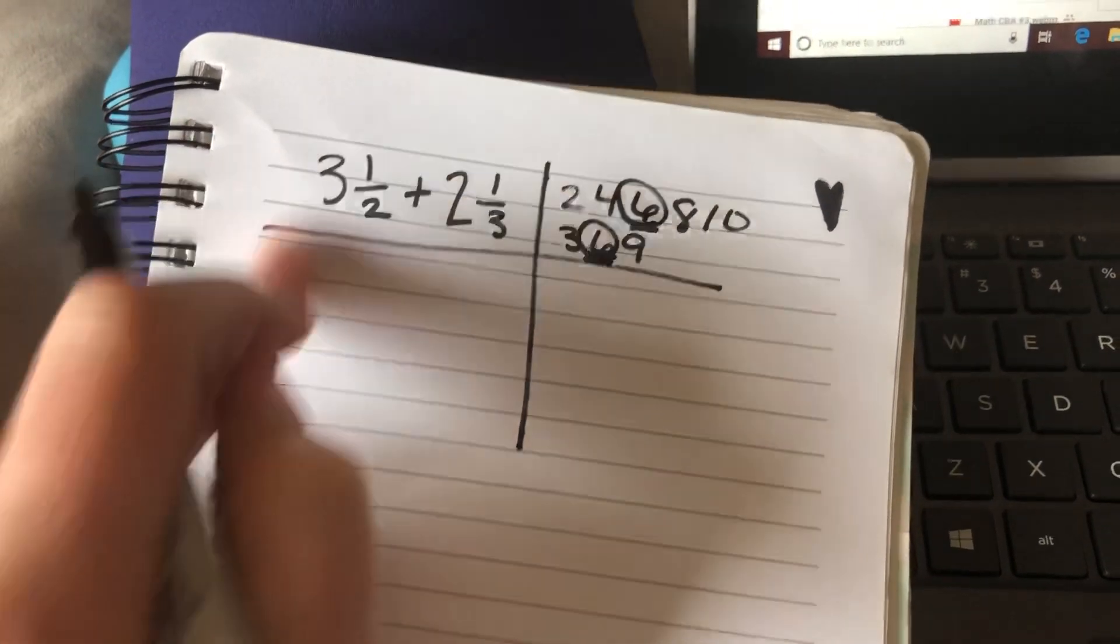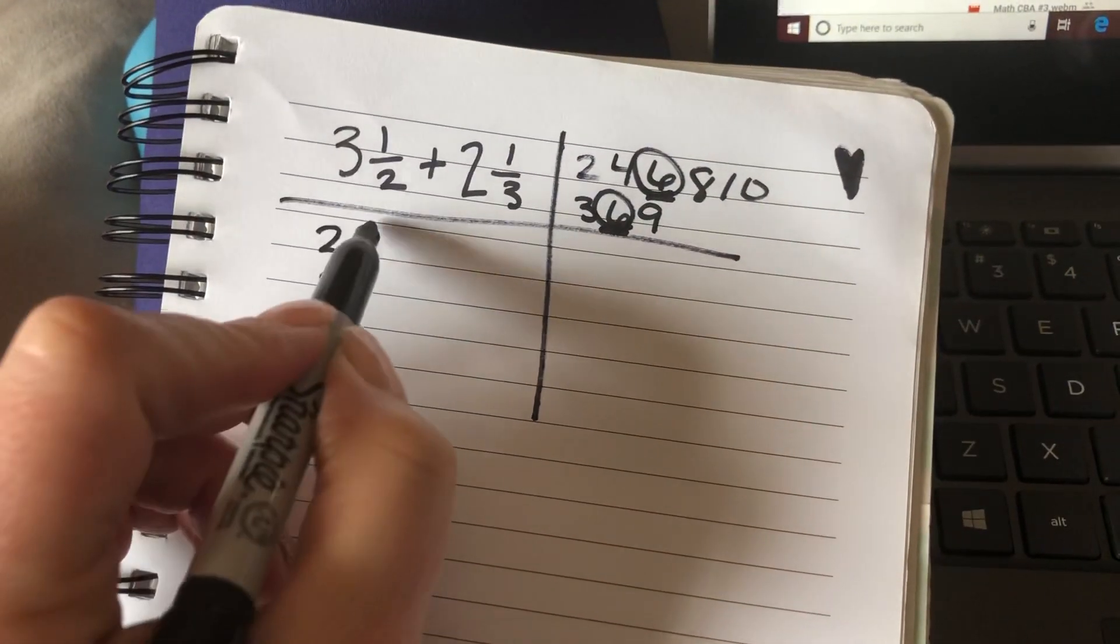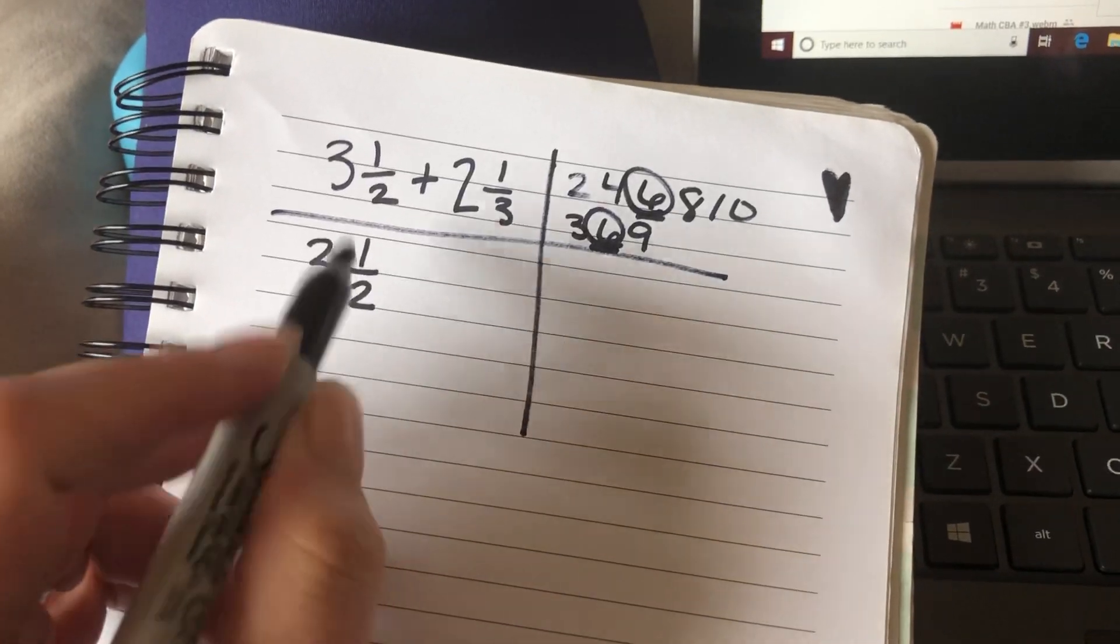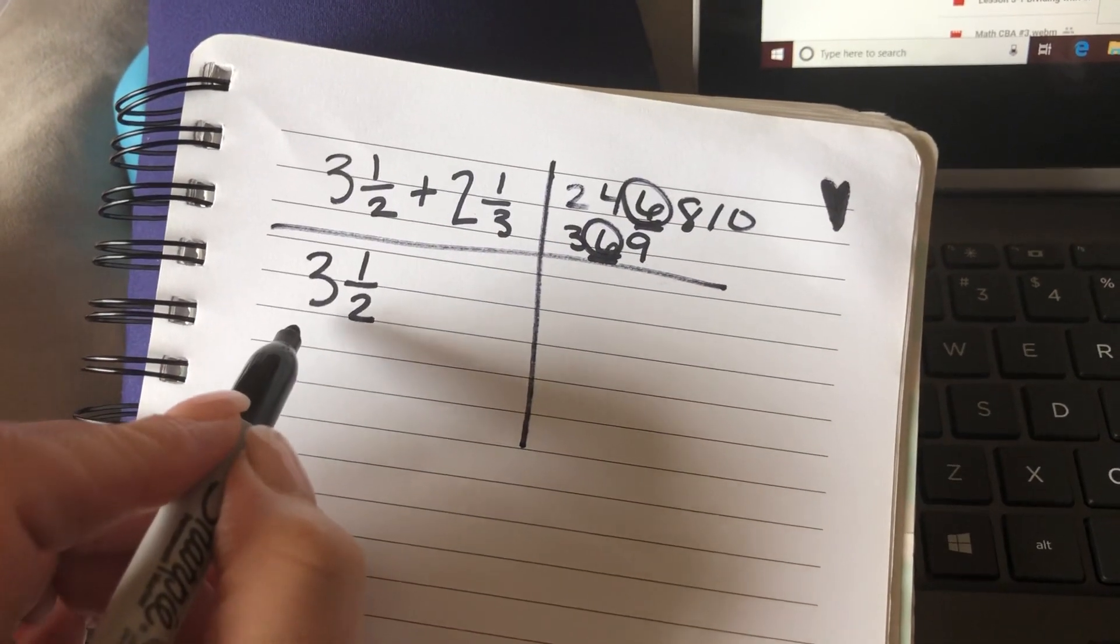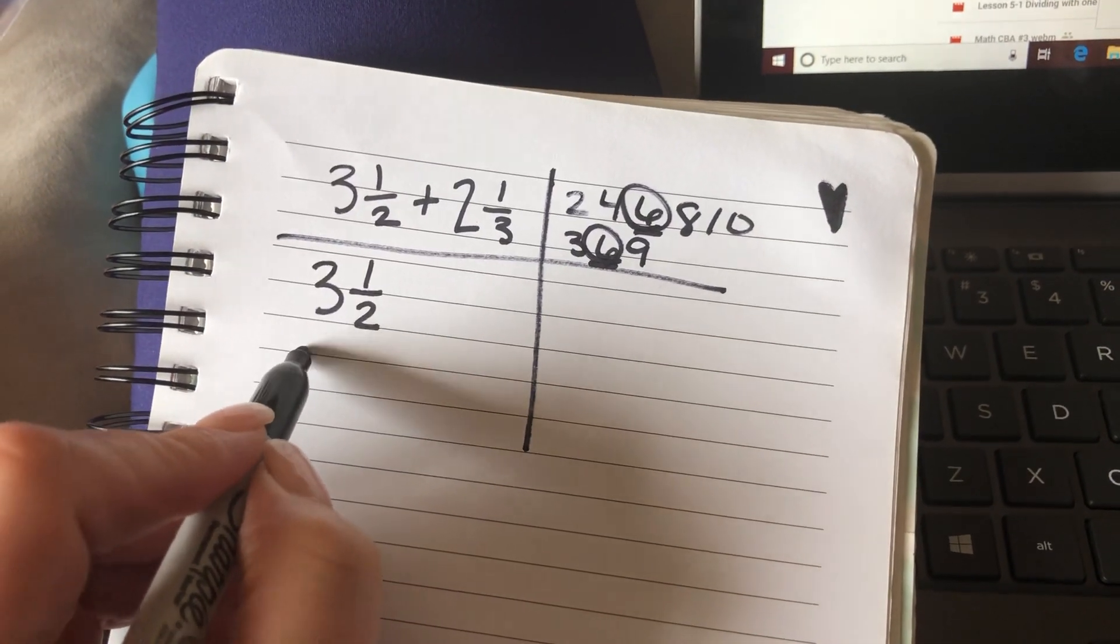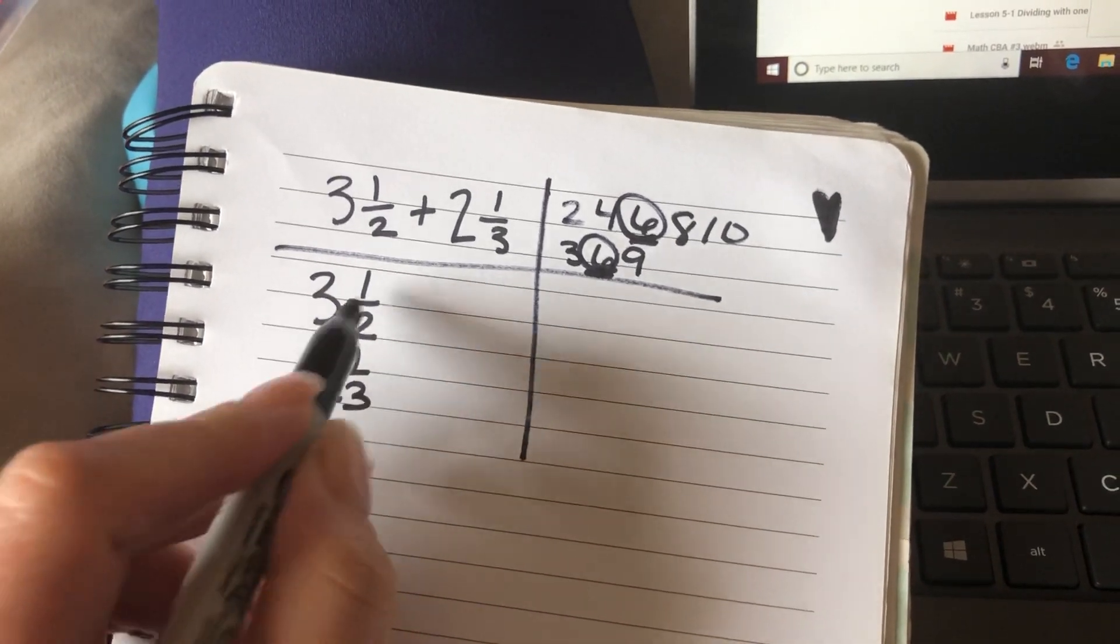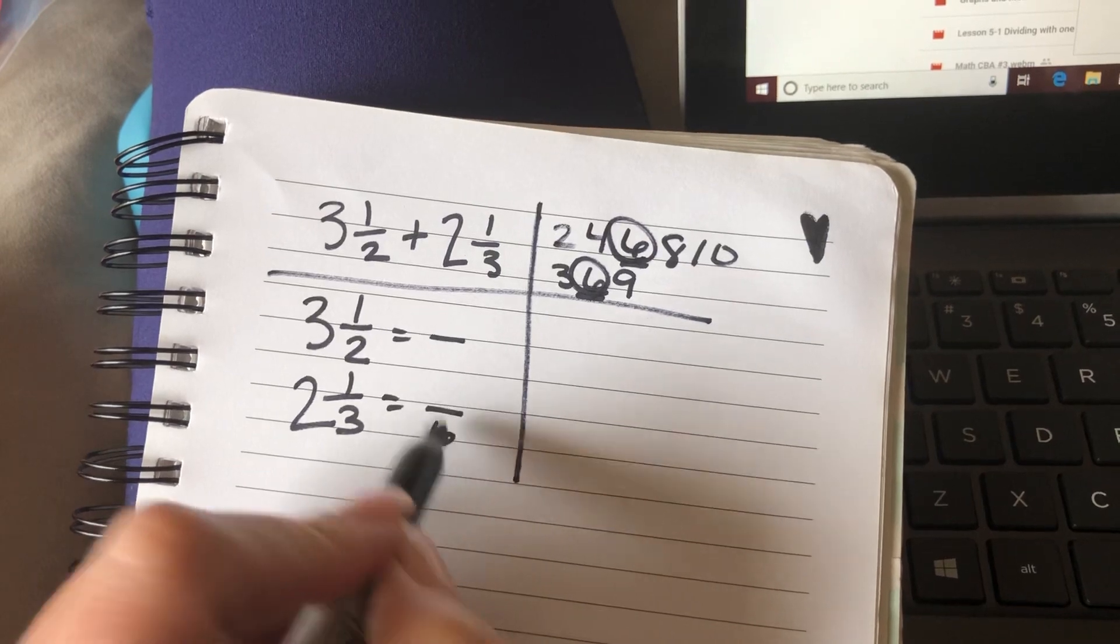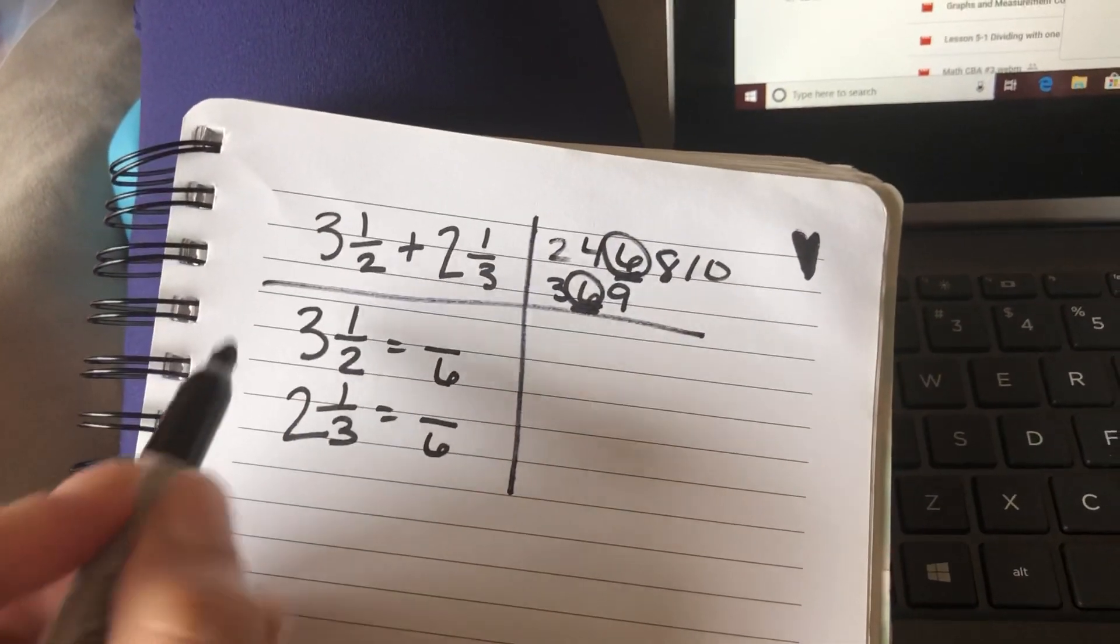So we find a common denominator. Now, whenever we add, we always add vertically, or we line them up vertically so that we can keep with our same place values. 3 and 1/2 plus 2 and 1/3. Can't do that, so I have to find their equivalent fraction for 6.